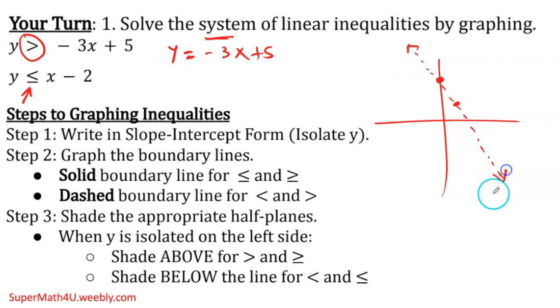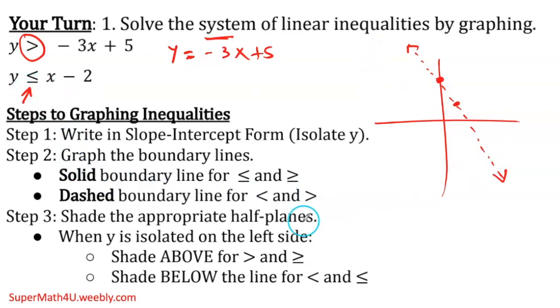So those two points will be connected with a dashed line — that's what it means. If it has an equal, then it's going to be a solid line.